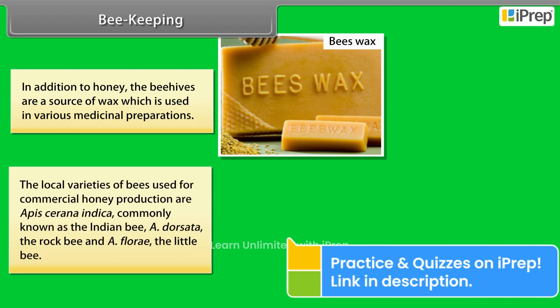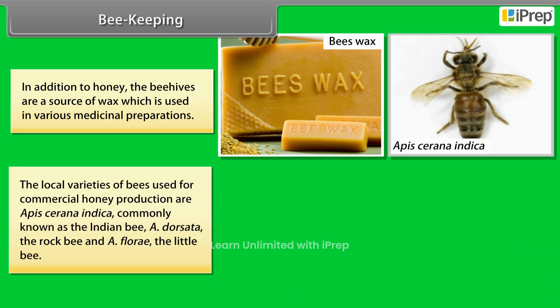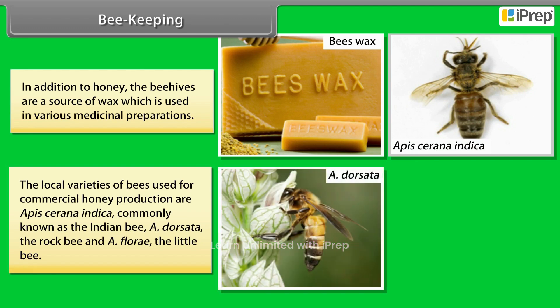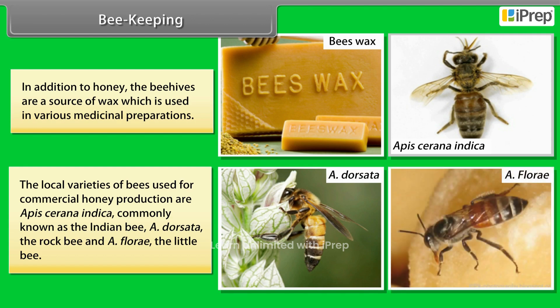The local varieties of bees used for commercial honey production are Apis cerana indica, commonly known as the Indian bee, A. dorsata, the rock bee, and A. florea, the little bee.